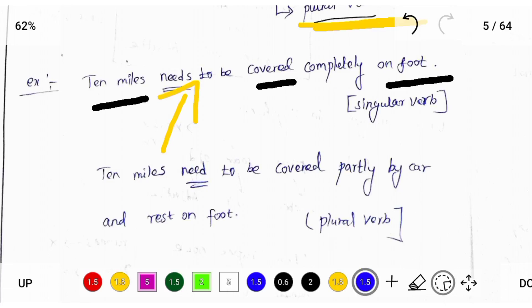10 miles need to be covered partly by car and rest on foot. Here 10 miles to be covered by car and rest on foot. So here we use plural verb need.